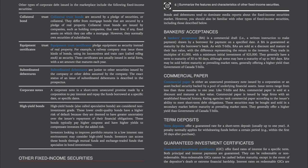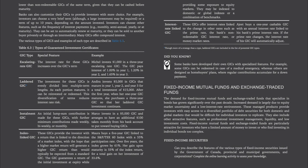Term deposits offer a guaranteed rate for a short-term deposit, usually up to one year. A penalty normally applies for withdrawing funds before a certain period — for example, within the first 30 days after purchase. Guaranteed Investment Certificates (GICs) offer fixed rates of interest for a specific term, with both principal and interest payments guaranteed. They can be redeemable or non-redeemable. Non-redeemable GICs cannot be cashed before maturity except in the event of the depositor's death or extreme financial hardship. Interest rates on redeemable GICs are lower than non-redeemable GICs of the same term.